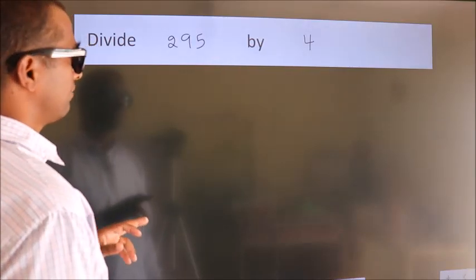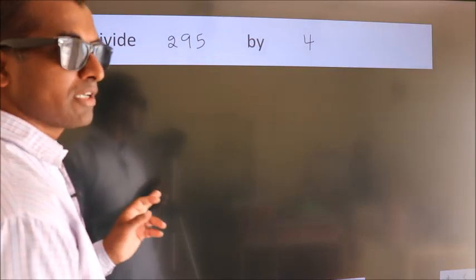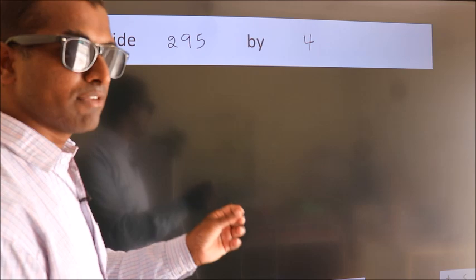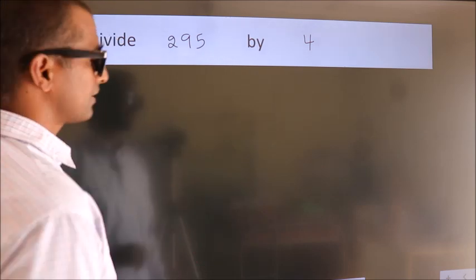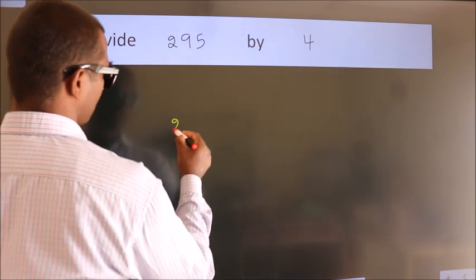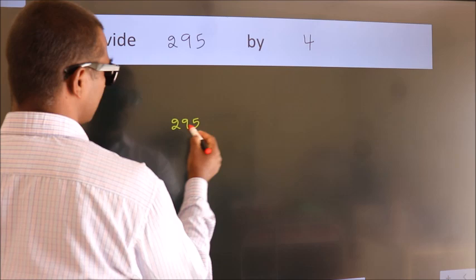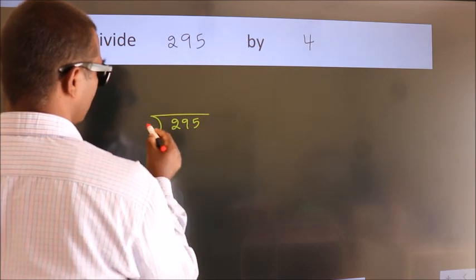Divide 295 by 4. To do this division, we should frame it in this way: 295 here, 4 here.